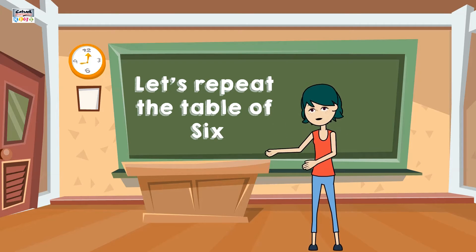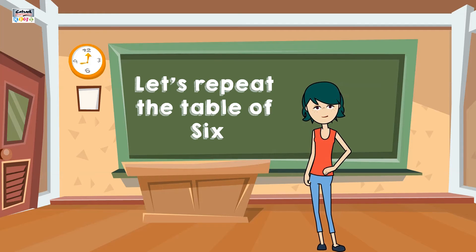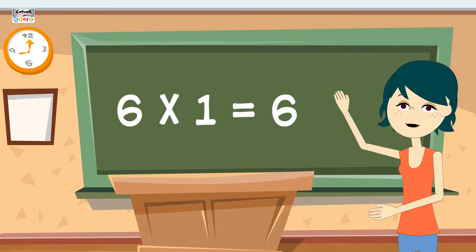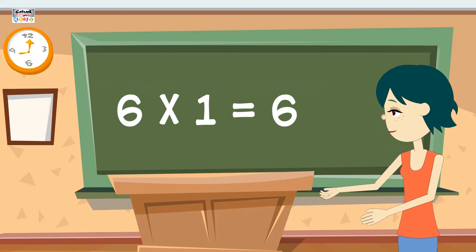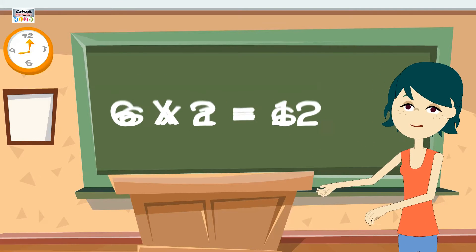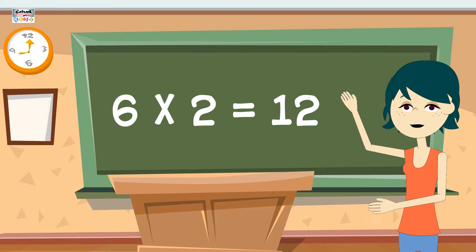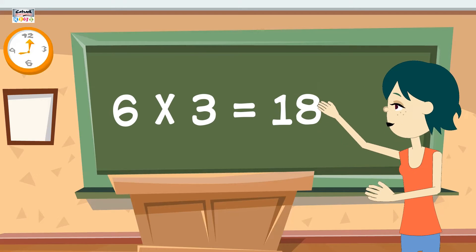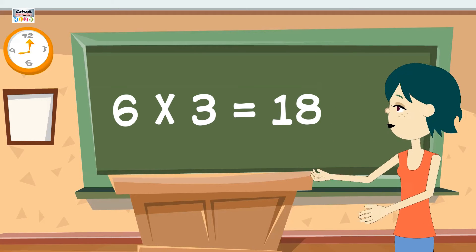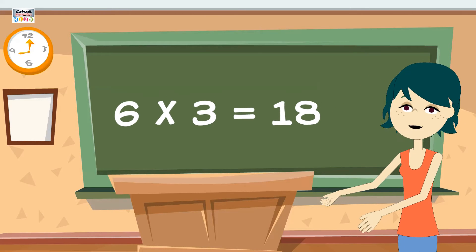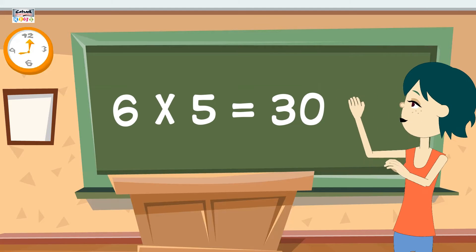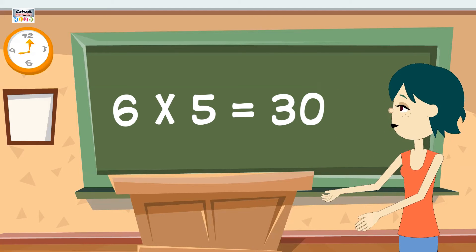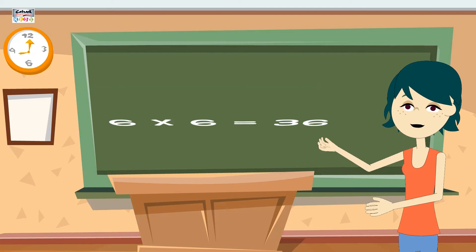The table of 6. 6 1's are 6, 6 2's are 12, 6 3's are 18, 6 4's are 24, 6 5's are 30.